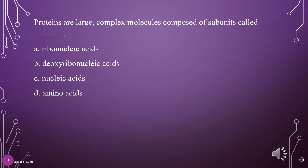Proteins are large, complex molecules composed of subunits called what? A. Ribonucleic acids, B. Deoxyribonucleic acids, C. Nucleic acids, D. Amino acids. The answer is D: Amino acids.